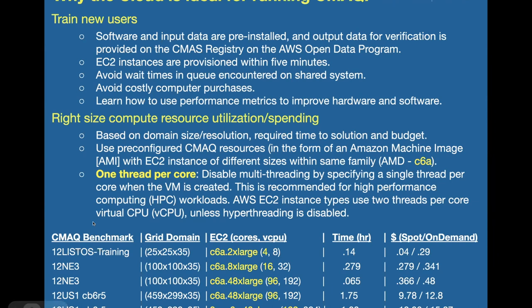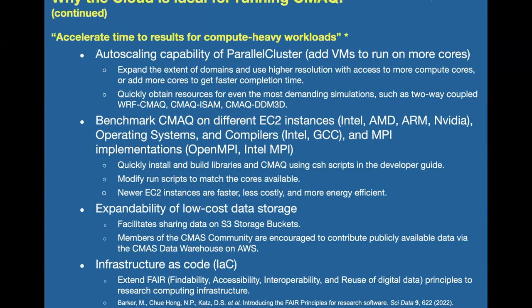You don't have to use the most expensive compute nodes to run smaller cases. You can right-size the choices you make in terms of what resources you want to use for the domain size that you have. The parallel cluster also allows you to auto-scale, using more virtual machines to run CMAQ on the cloud. If you're running a base case small domain, you could use a very small compute node. If you're running more complex cases, such as WRF-CMAQ with two-way coupling, you might need a larger EC2 instance.